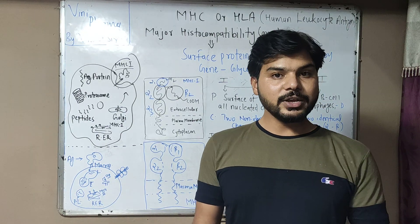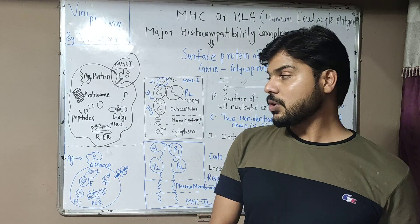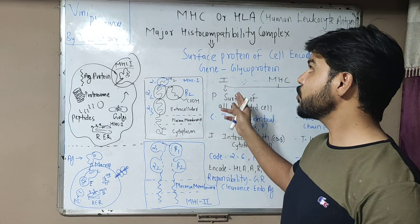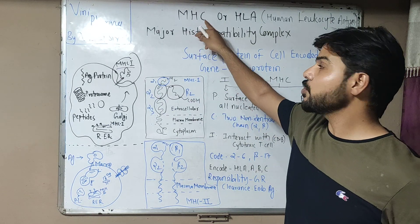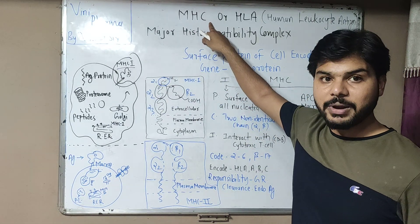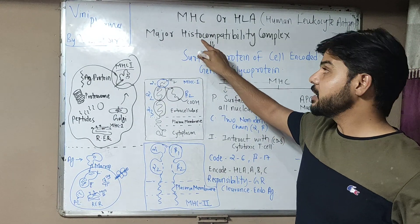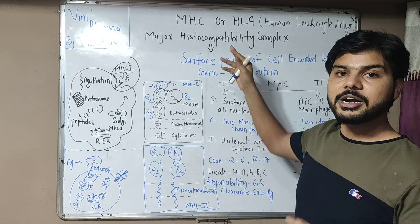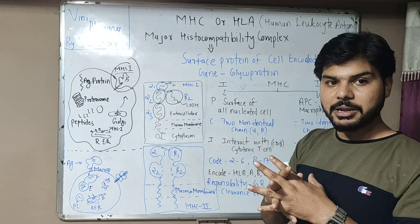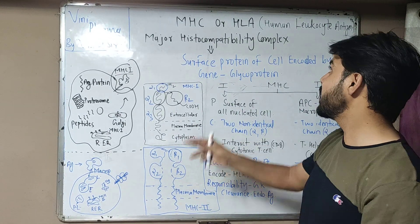One more interesting function relates to grafting. Graft rejection is all because of the MHC — the Major Histocompatibility Complex. It determines whether a lymphocyte has tissue compatibility or incompatibility, leading to graft rejection.